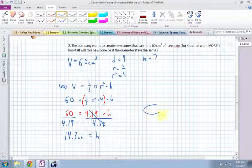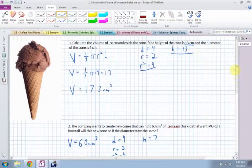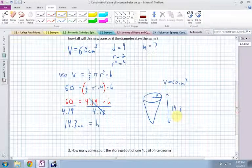And that's the height of the new cone. So if I had a cone, the diameter would still be the same, or the radius would be 2. It holds 60 centimeters cubed, and the height from top to bottom is going to be 14.3. So the original height on the other one was 13. This one, of course, has to be more height because it has to hold more volume.